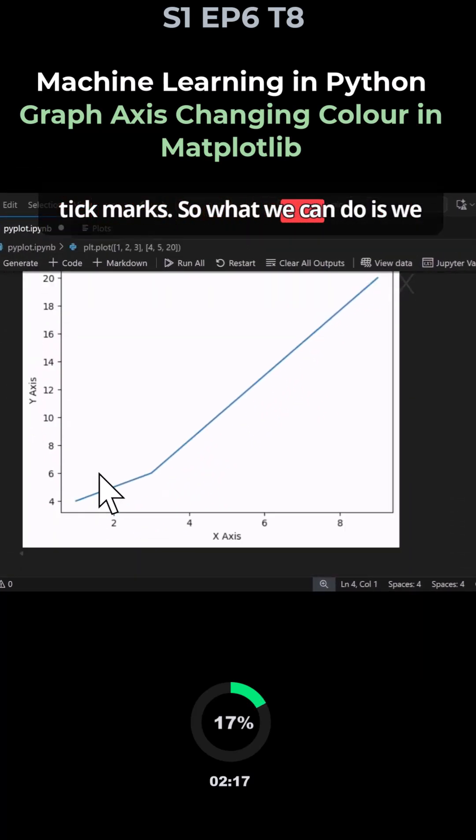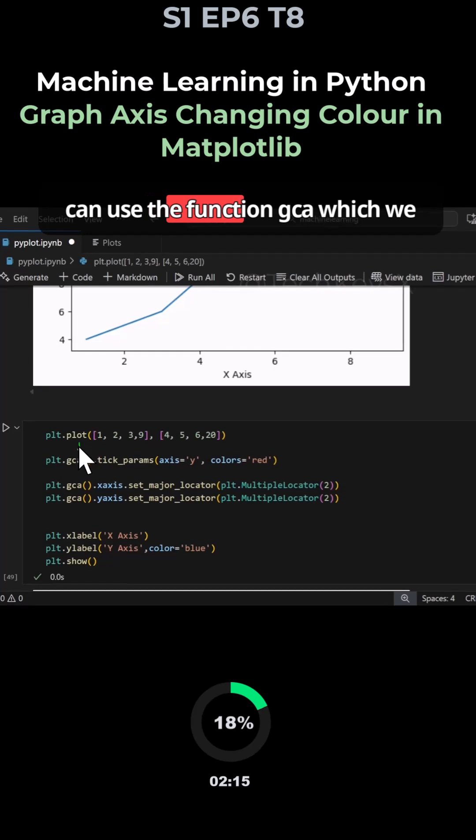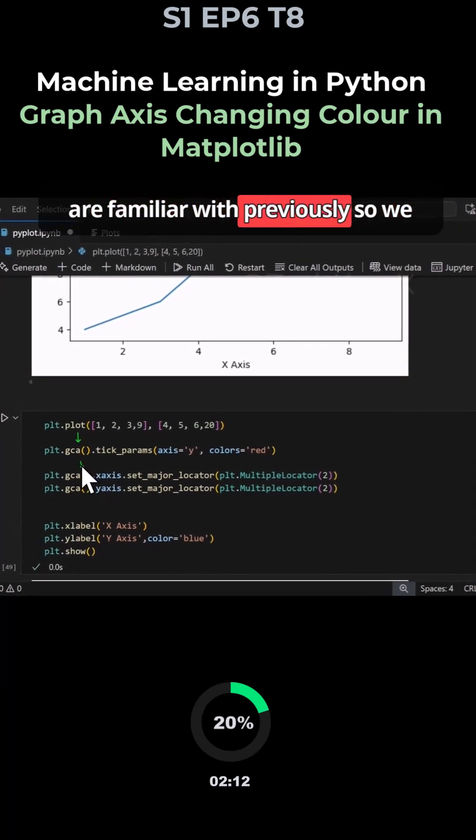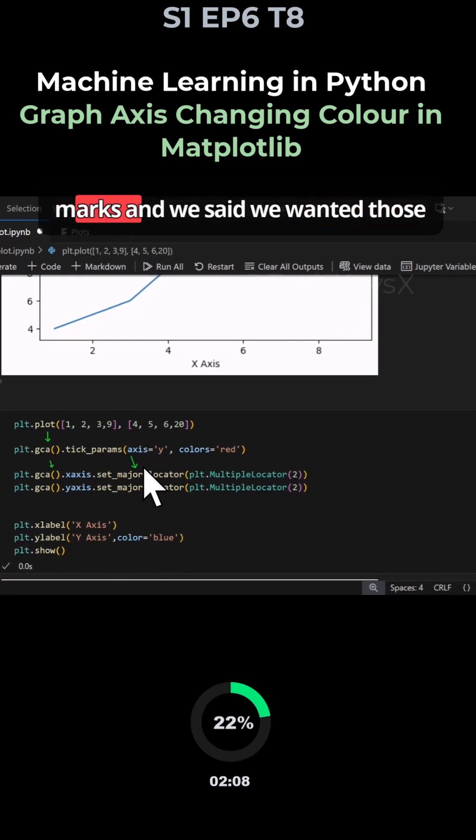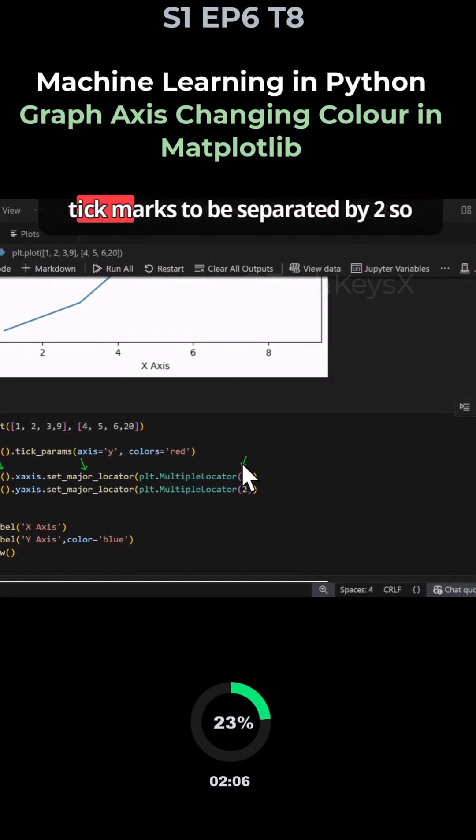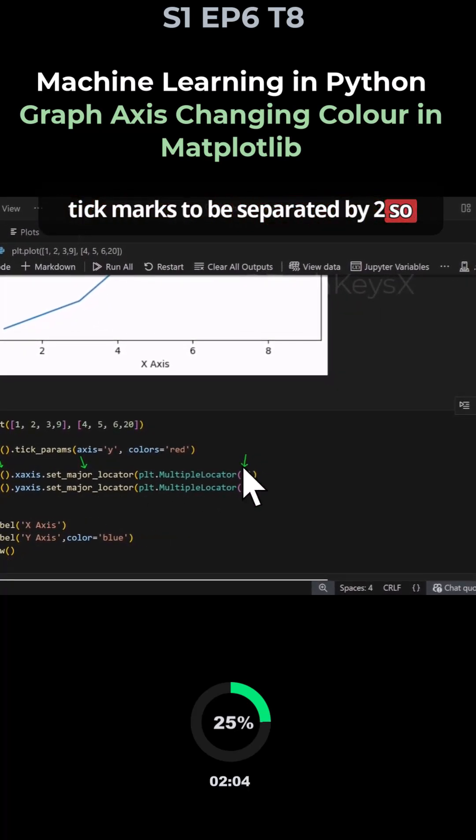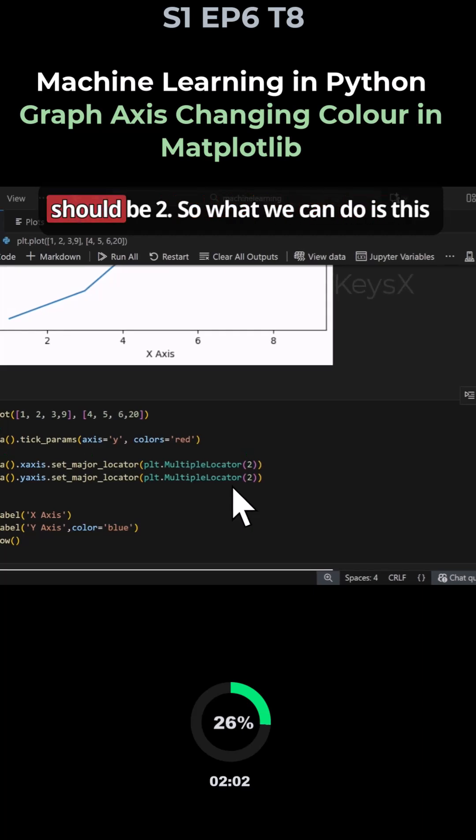What we can do is use the function gca which we are familiar with previously. We used it to basically set the major tick marks and we said we wanted those tick marks to be separated by two, so the gap between each tick mark should be two.